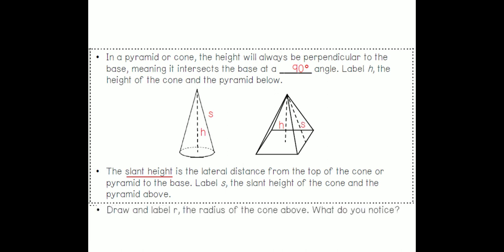The next question wants us to draw and label R the radius of the cone above. So the radius of the cone is the distance from the center to the edge of the circle. We're going to label that R. They ask us what do we notice? What shape do we see inside this cone? Well it's a right triangle and the S the slant height is the hypotenuse. The R and the H form the legs. The S is our hypotenuse.